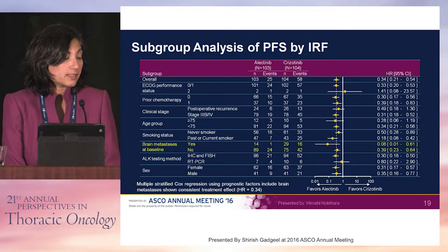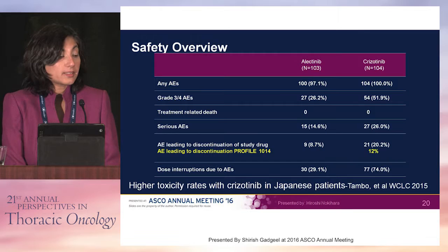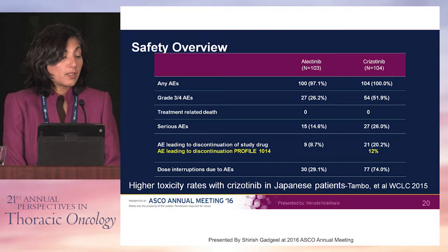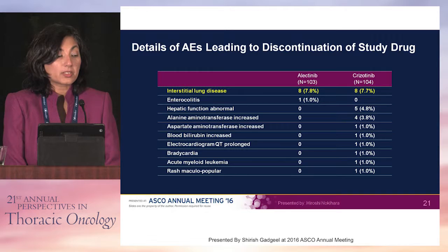The primary endpoint is progression-free survival, which favored alectinib with a hazard ratio of 0.34. Subgroup analyses showed activity across patients with prior chemotherapy, clinical stage, smoking status, and those with brain metastases at baseline. Looking at toxicity, about 8.7% of patients on alectinib had an adverse event leading to discontinuation, in contrast to crizotinib. About 8% of patients on both arms had interstitial lung disease, which has been noted with other ALK inhibitors and is likely a class effect.